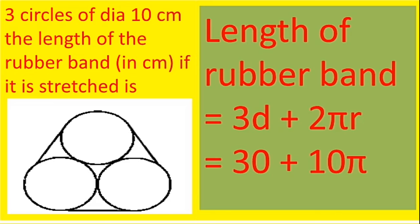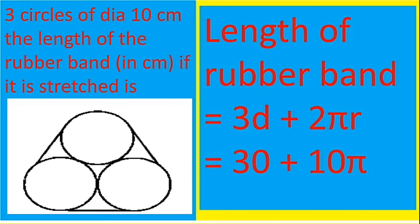3D plus 2 pi r. So 3D is 3 into 10 is 30, and 2 pi r, 2 into pi into—the D is 10, so r will be 5. So the answer is 30 plus 10 pi.